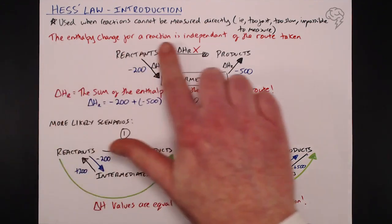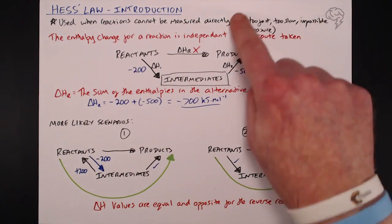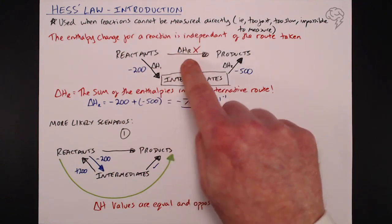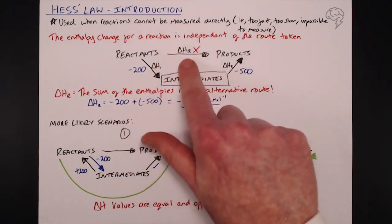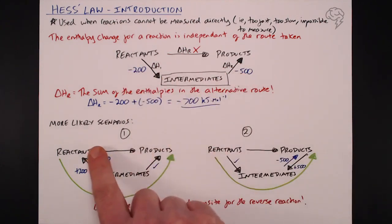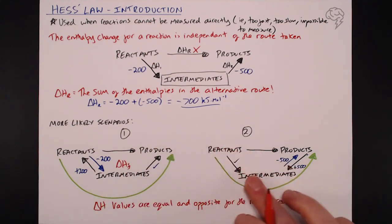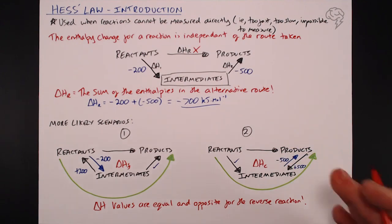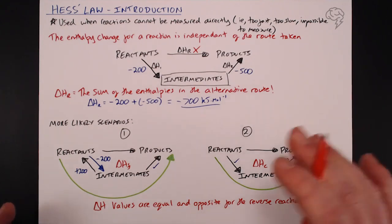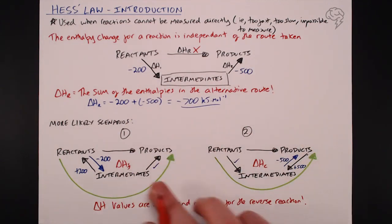So to summarise: Hess's law states that the enthalpy change for a reaction is independent of the route taken, and we use it when we can't measure delta H values directly in the lab. The sum of the alternative route enthalpies equals our delta H-r. And remember: delta H values are equal and opposite for the reverse reaction. In the next tutorials, I'll cover how this applies specifically to delta H-f values — where arrows go upward — and delta H-c combustion values, where arrows go downward.